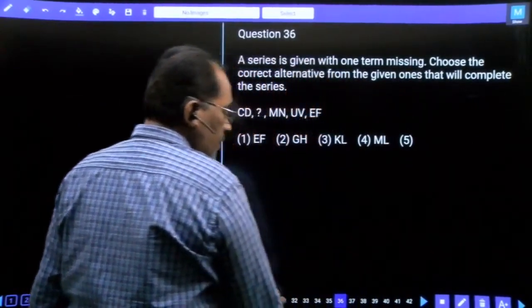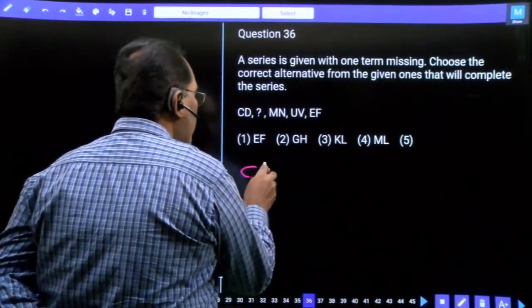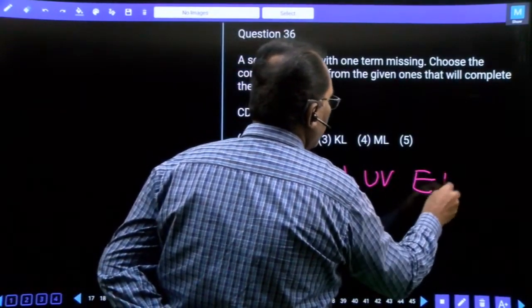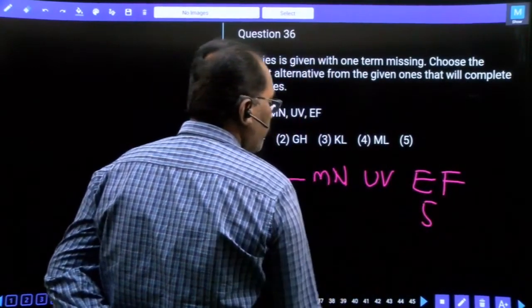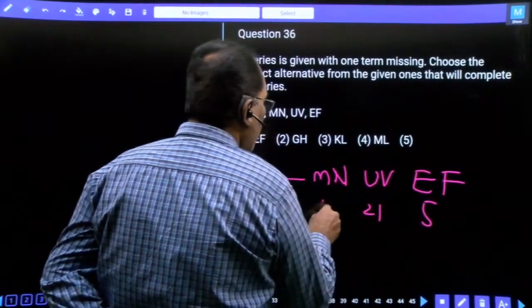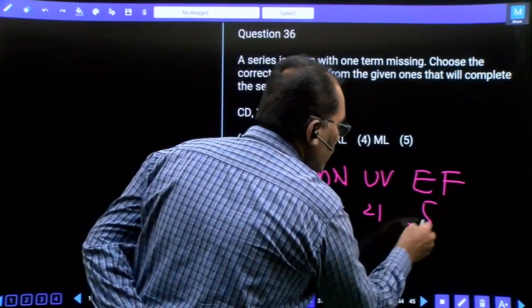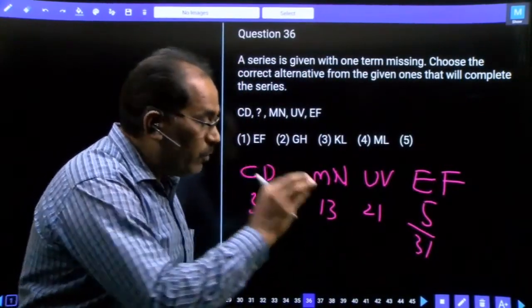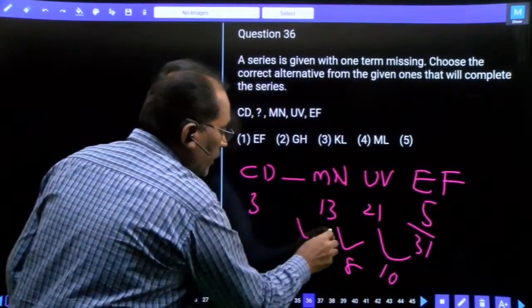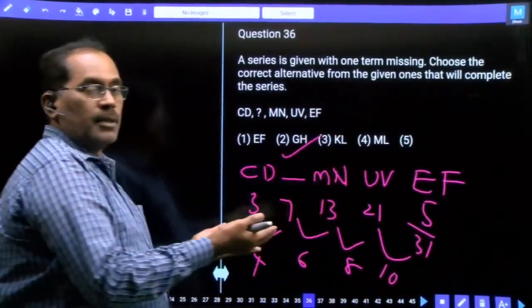Question 36, this is also a letter series. We have C, D, dash, M, N, then U, V, then E, F. The pattern is 5, 21, 13, 3. The difference is 10, 8, 6, then 4. 13 minus 6 equals 7. Our answer is G, H. Yes, option H, first option.